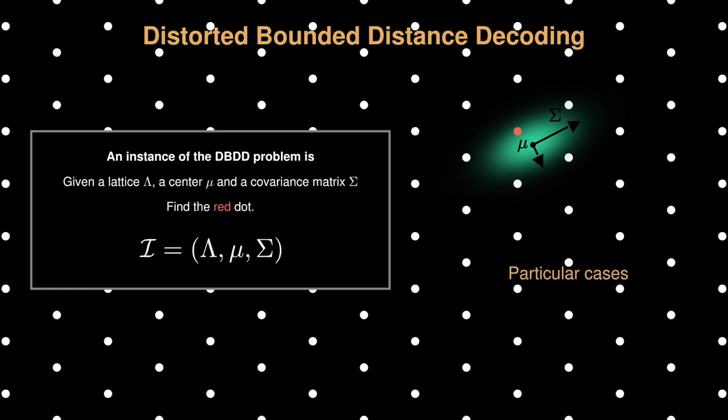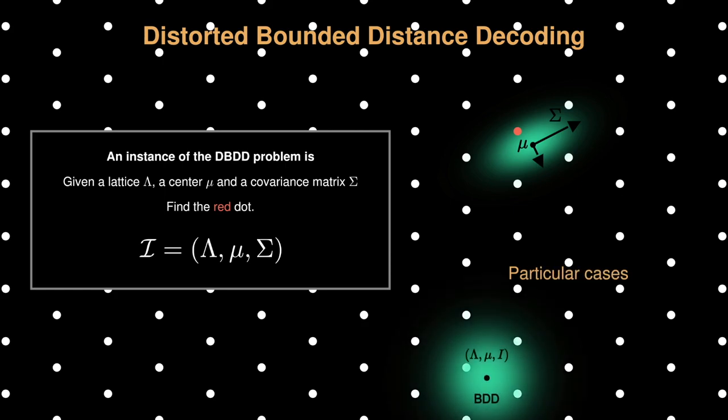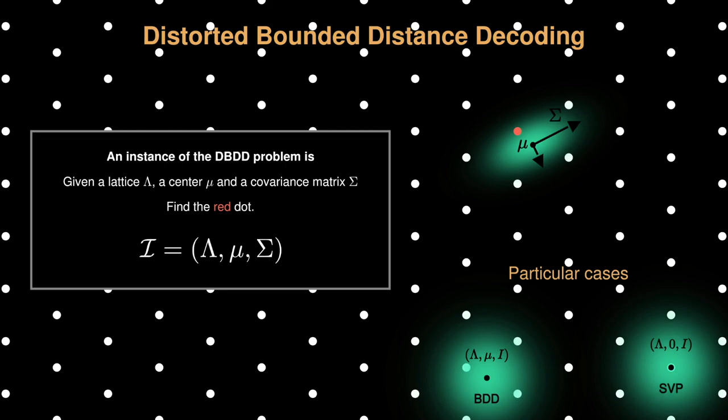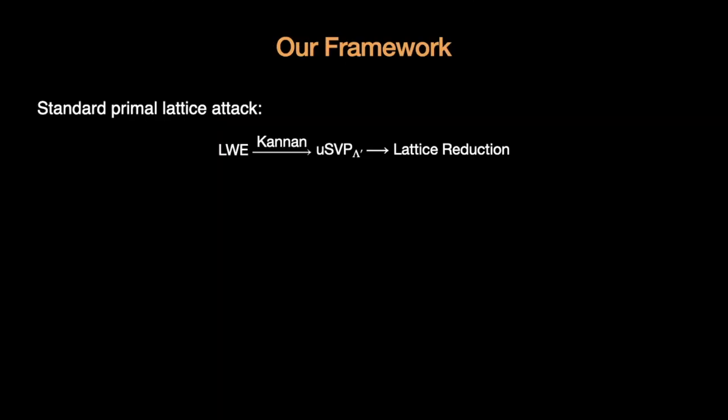There are some particular cases. For example, when the covariance is the identity, we fall back to bounded distance decoding. When the center is zero and the covariance is the identity, we fall back to the shortest vector problem. Usually, to attack a learning with error instance, one transforms the learning with error instance in a shortest vector problem instance. The latter can be attacked with a lattice reduction.